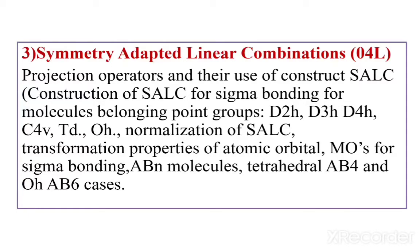The transformation properties of atomic orbitals, that is MOs for sigma bonding. Then ABn molecules: tetrahedral (AB4) and octahedral (AB6) cases.